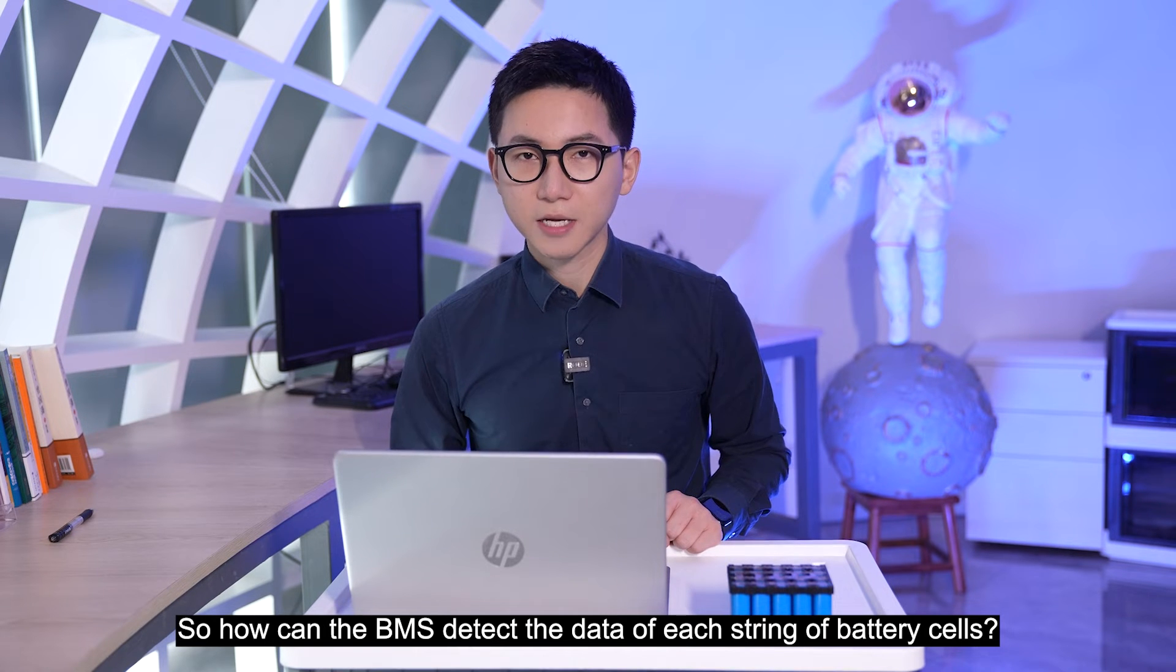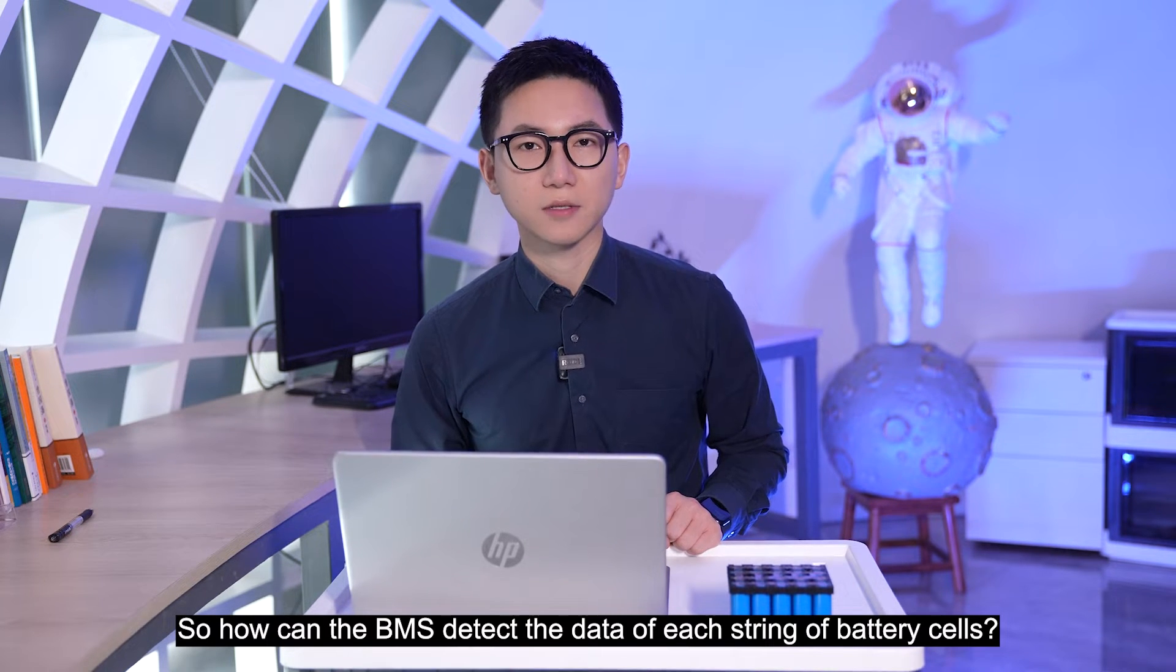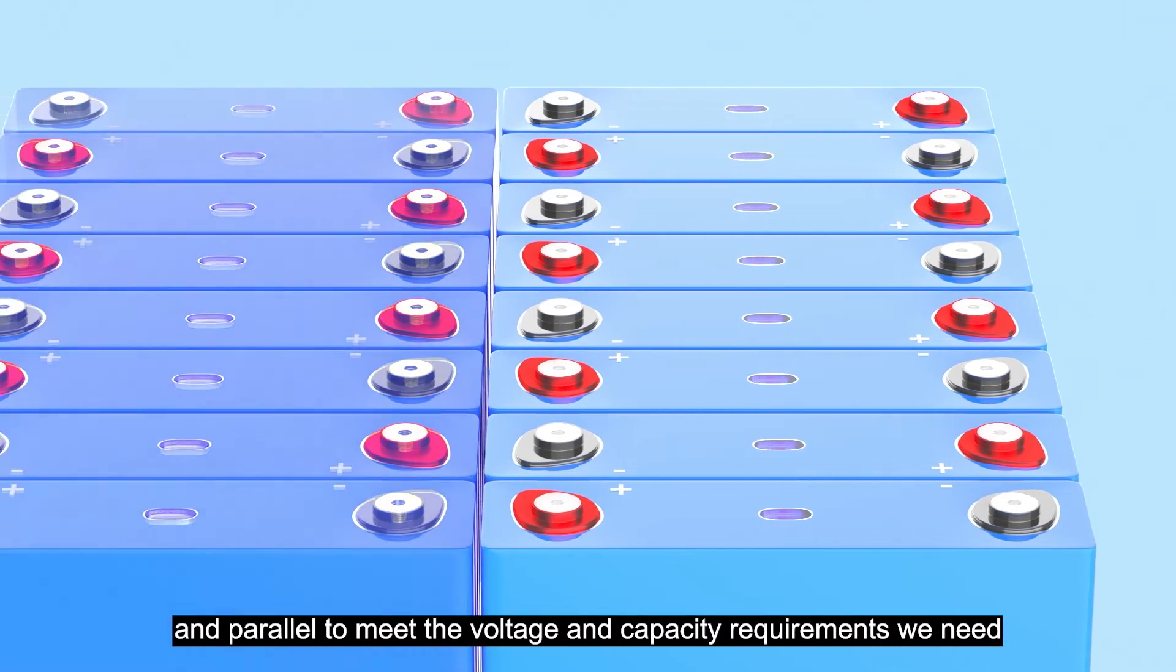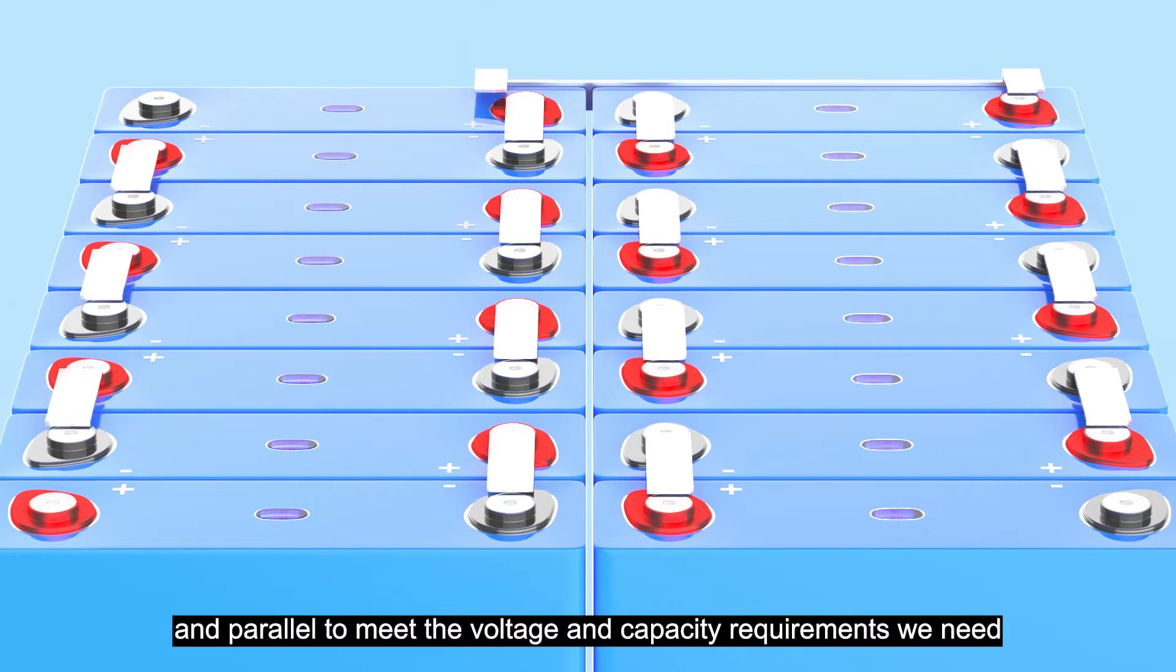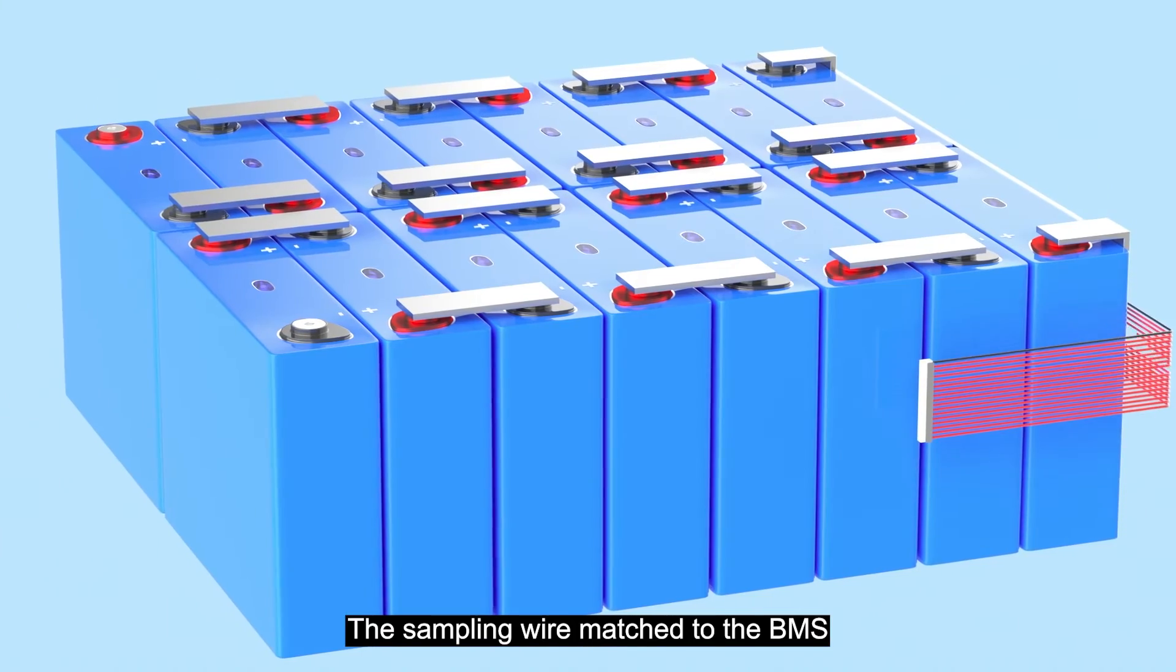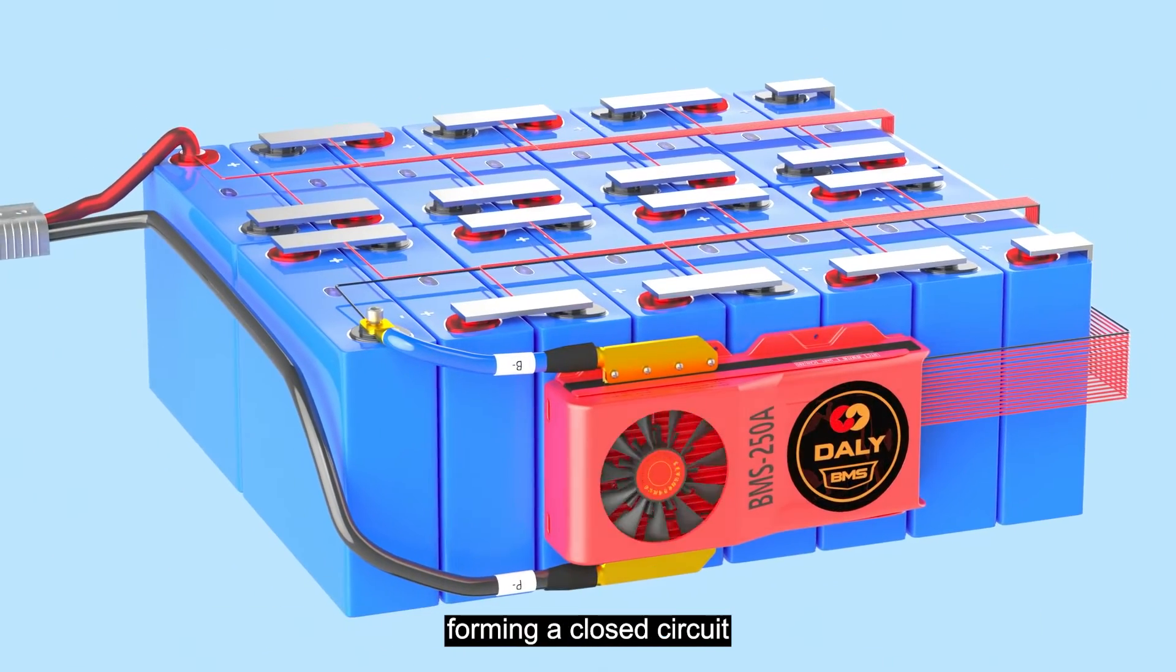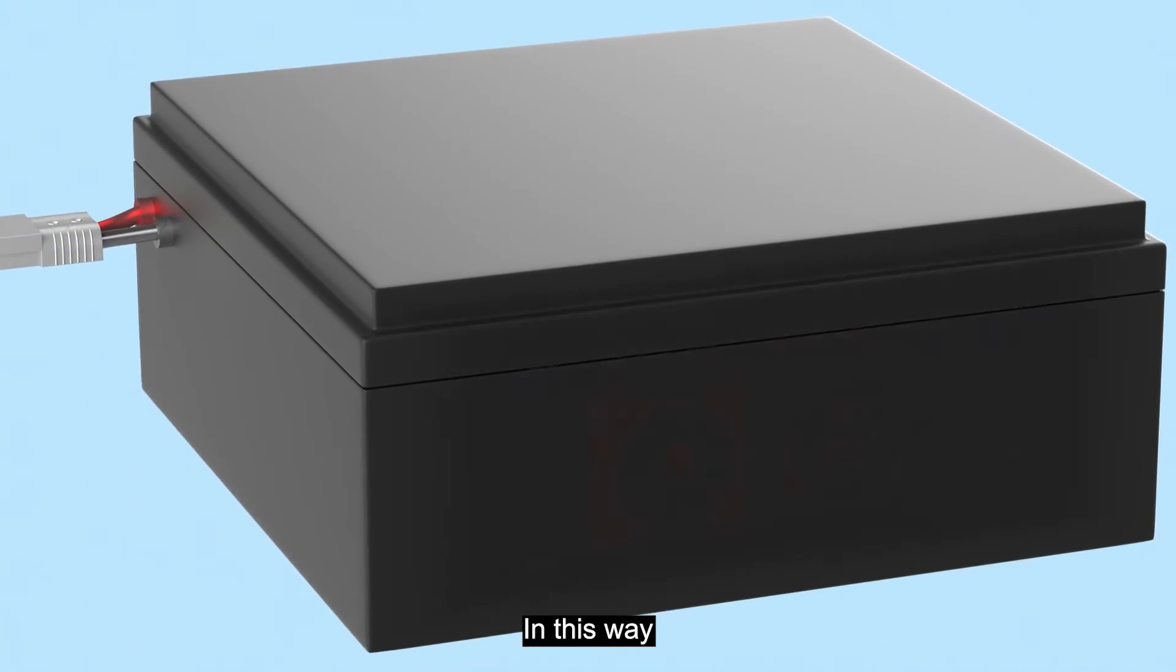So how can the BMS detect the data for each string of battery cells? Lithium battery packs are made of multiple cells connecting in series and parallel to meet the voltage and capacity requirements we need. The assembly wire-matched BMS will be connected to the positive and negative poles of each battery string, forming a closed circuit. In this way,